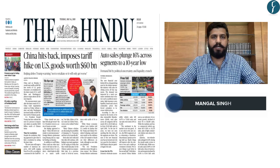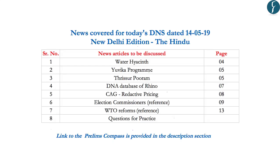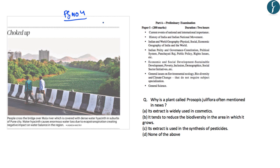Hello and welcome to Daily News Simplified — an answer to what, why, and how of newspaper reading. Today we will discuss articles from the daily edition of the Indian newspaper dated 14th May 2019. In today's newspaper there are a few news snippets which can be important from the preliminary examination point of view, so let us take them one by one.